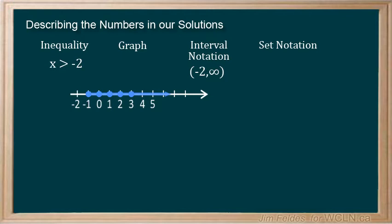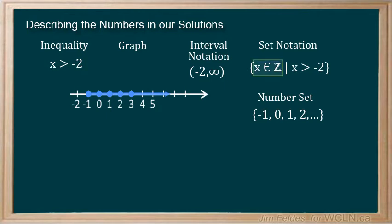And we add set notation as our method of specifying the types of numbers in our solution. You are likely familiar with this type of notation, a way to use symbols to detail a particular set of numbers making up our solution. This would be read as the set of all x's that are members of integers, such that x is greater than negative 2. Sometimes the type of numbers in the set are stated at the end, which is also fine.